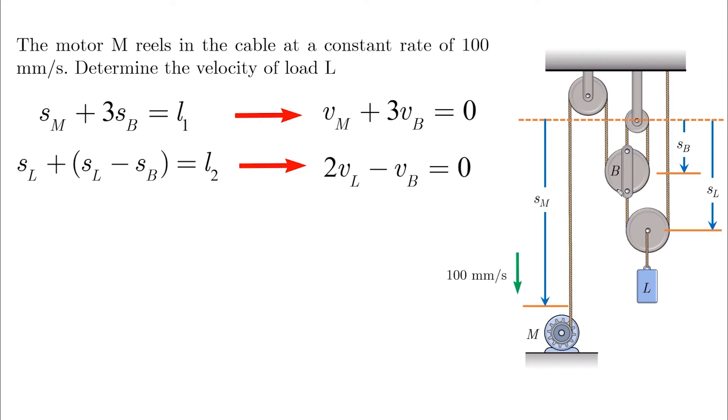We don't want the intermediate point, which is point B. So we will eliminate VB from both velocity equations. And the result will be VM plus 6VL equals to zero.